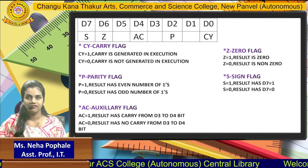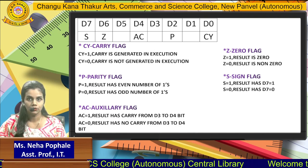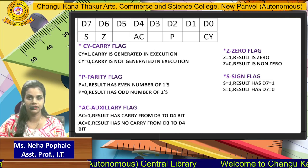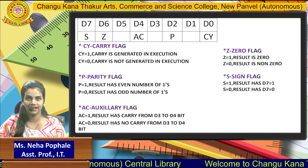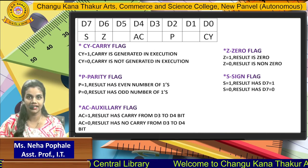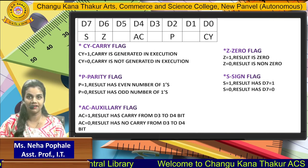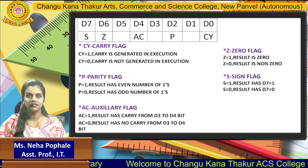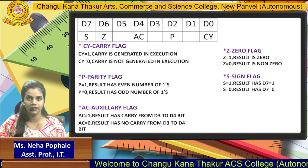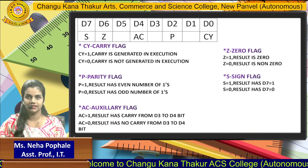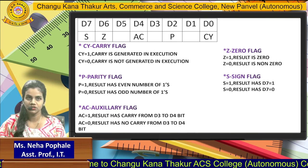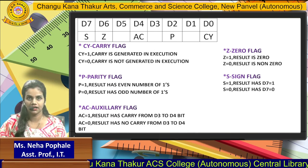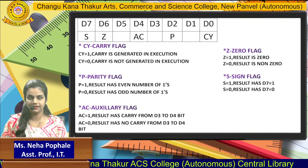The last flag is the sign flag. The sign flag is set to 1 when D7, the last bit of the result, is 1; otherwise it is set to 0. This was all about the flag register.